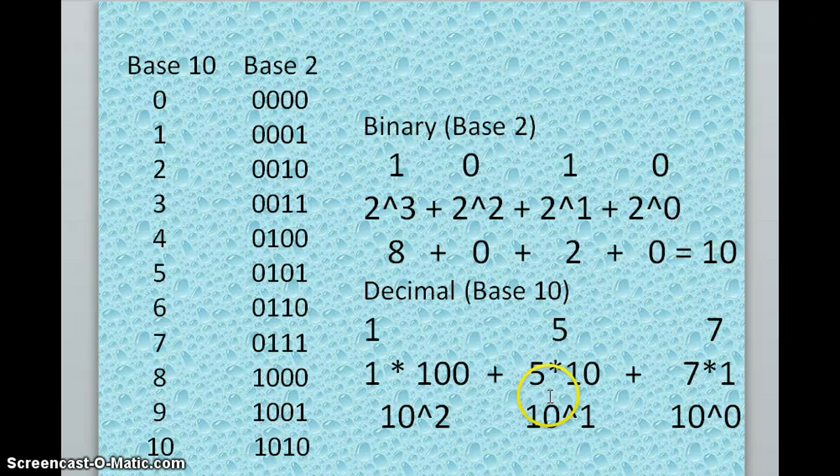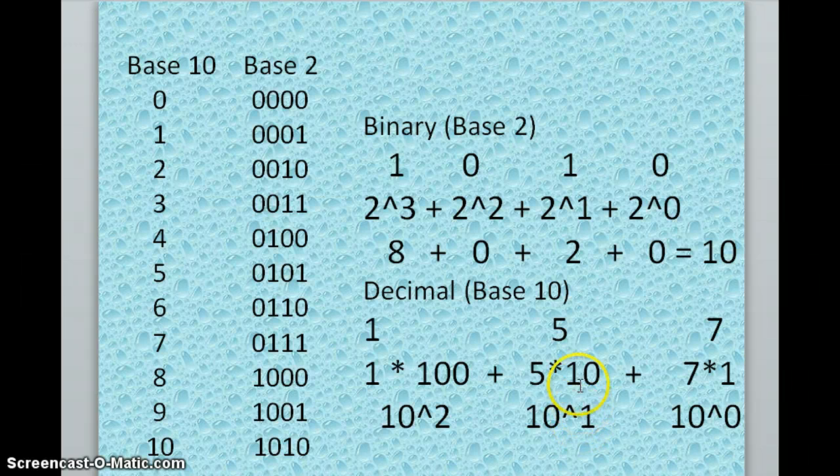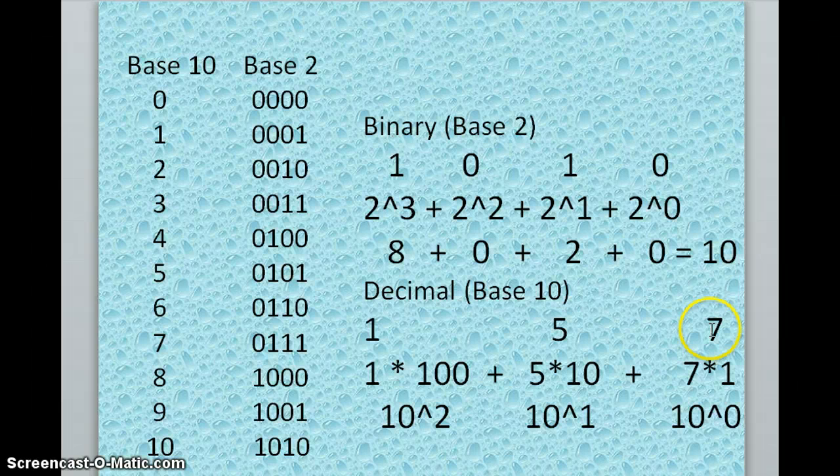Now, how do we get this 5 here? We said, okay, this is the ones place, the power of one place, and we will say 10 to the 1 is what? It is 10. Now we'll take the value of 5, multiply that times 10, and we will know that it is 50.